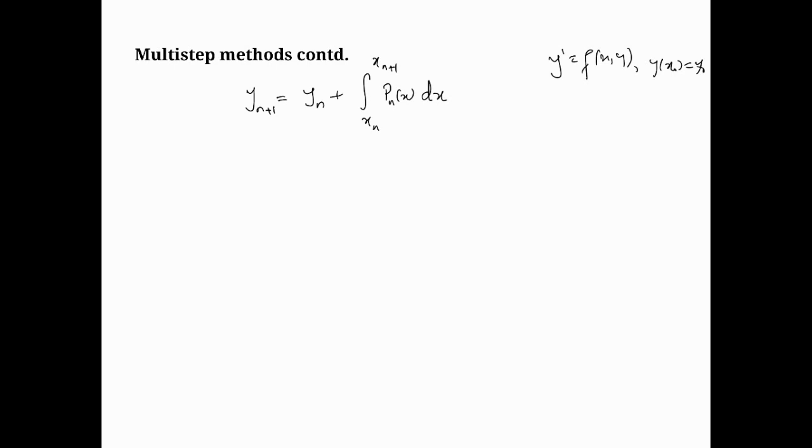So one way to overcome that would be to say that if we were to include fn plus 1 in the set of points that we're trying to interpolate the data, then we're not extrapolating. fn plus 1 then becomes within the interpolation points.